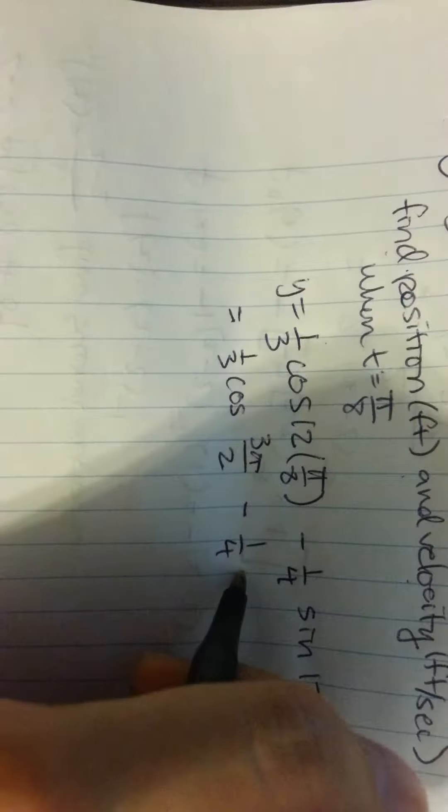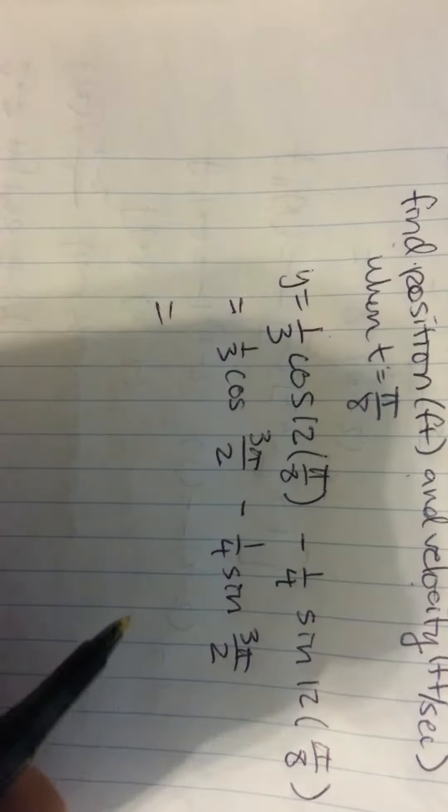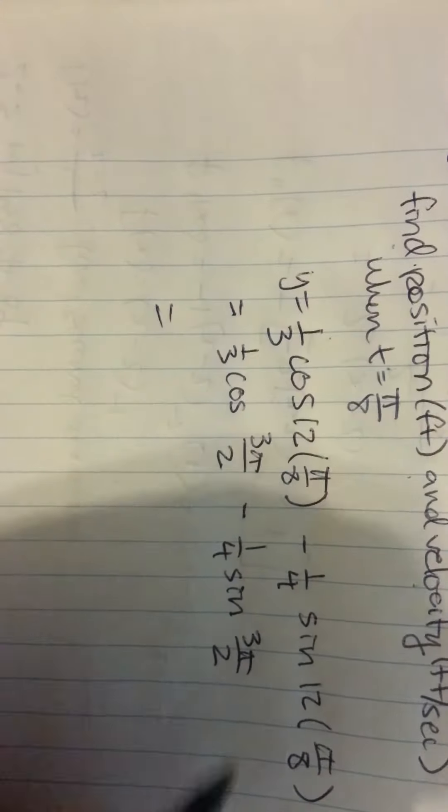That equals 1/3 cosine 3π/2 minus 1/4 sine 3π/2, which equals—since cosine of 3π/2 is 0 and sine of 3π/2 is negative 1—equals 1/4 feet. That's the position.